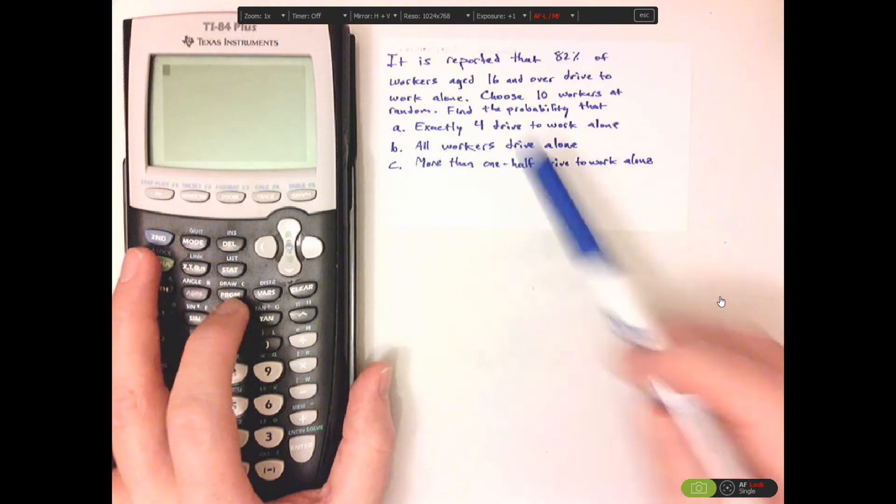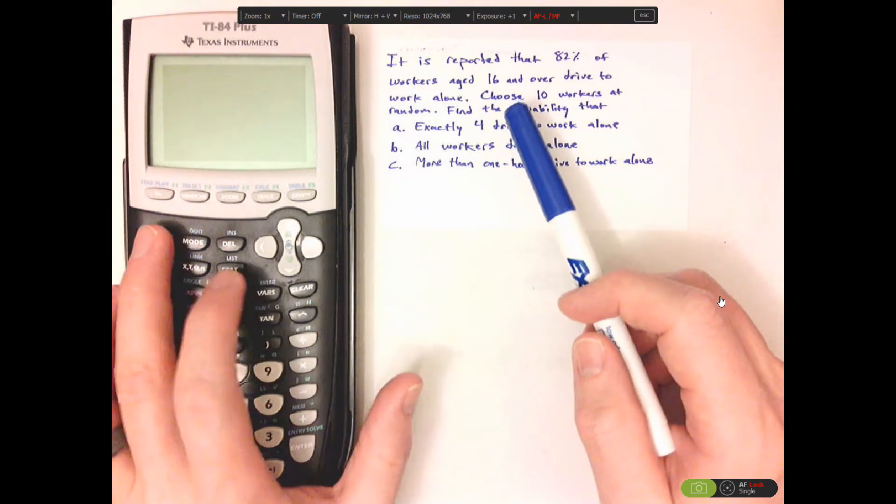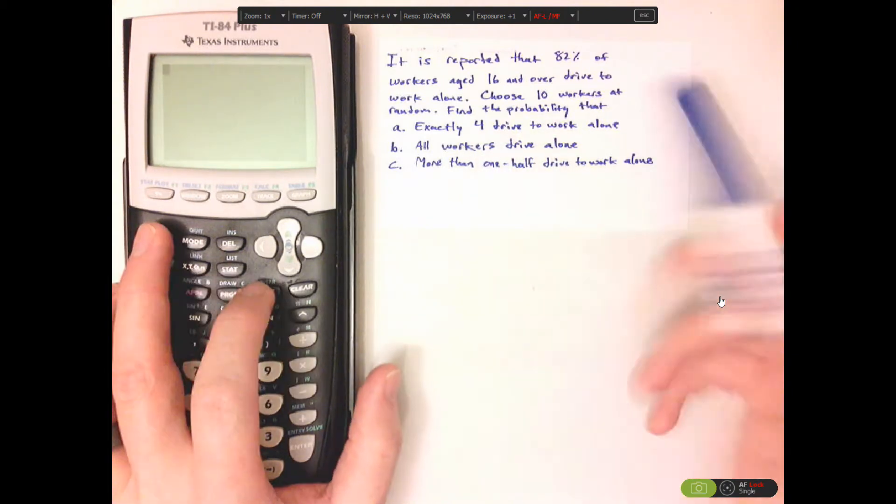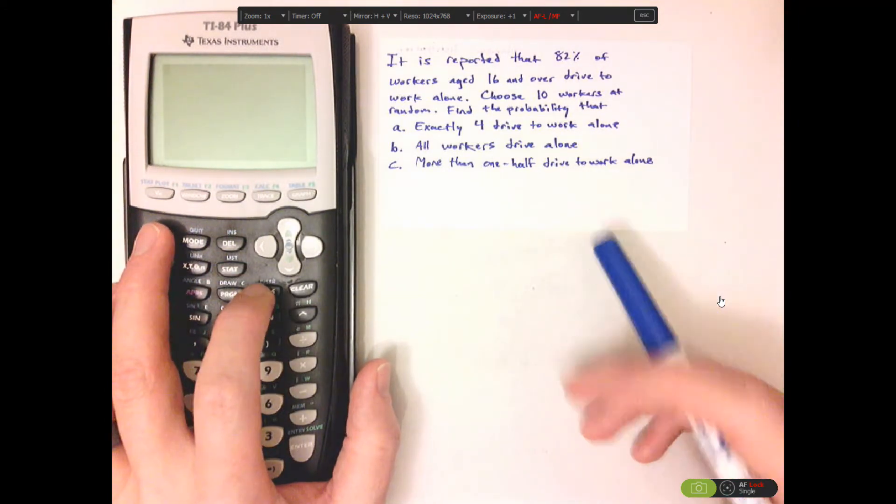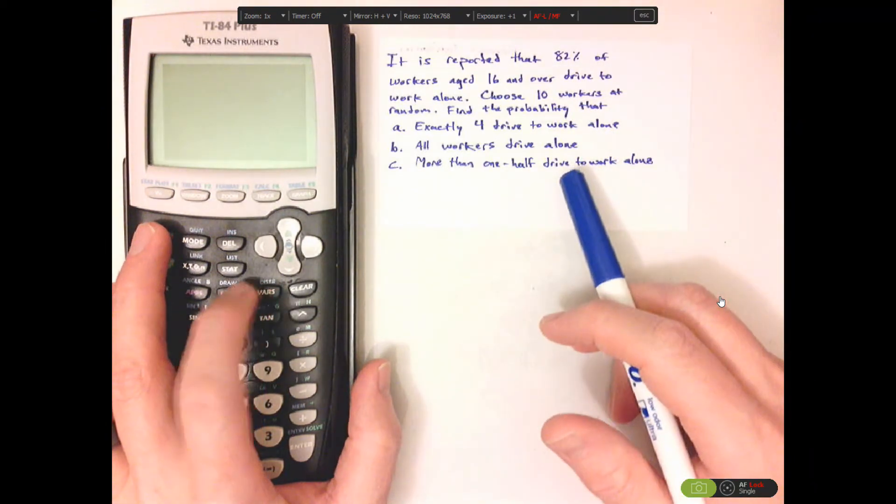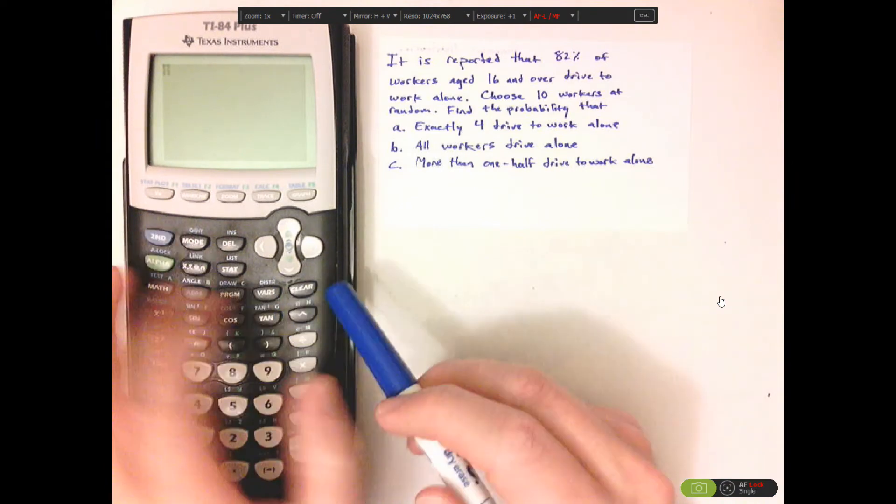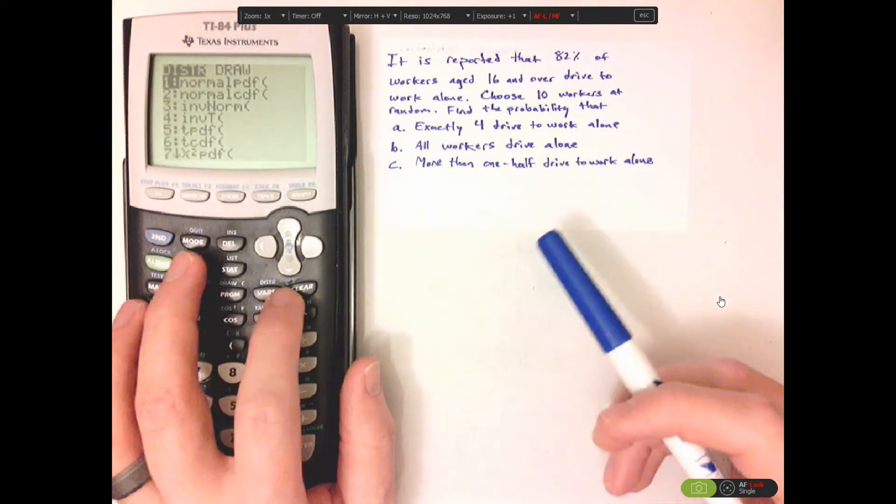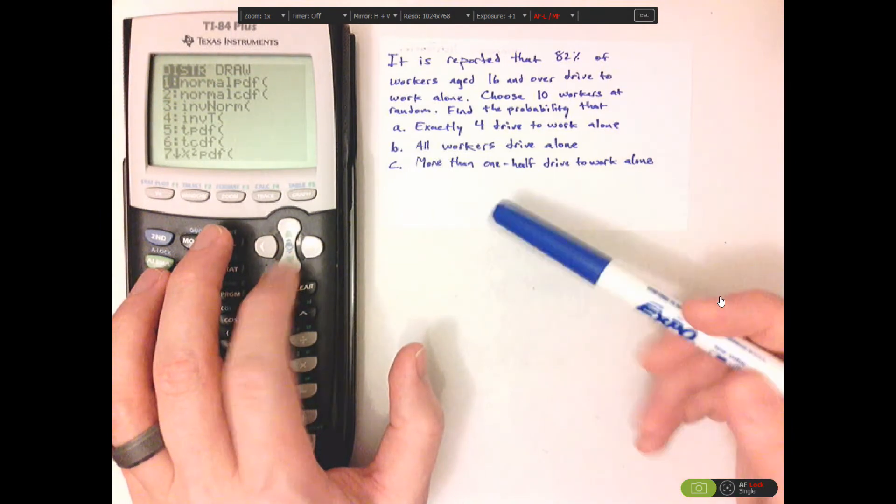All right, so we're going to be using a distribution here. We're going to use the binomial distribution because I can separate by either drive to work alone or don't drive to work alone. And again, it's fixed. So there's choosing out of 10. So go push second and then click on distributions. And we're going to be using the binomial distribution.